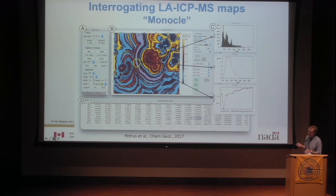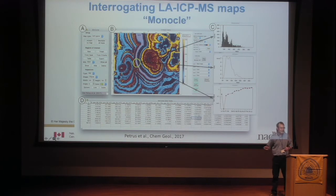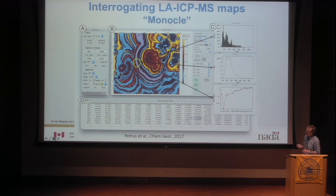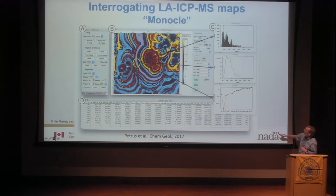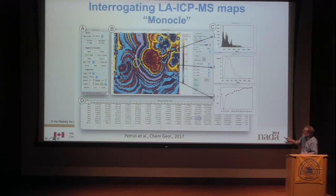Now we've got this massive amount of data we can generate in a matter of hours — how do we use it? This is where modern software comes into play. They're now developing very clever software that allows you to interrogate these elemental maps. For instance, the Monocle software lets you pick out an area of interest, immediately shows you histograms and rare earth plots for that area, and you can even use it as a seed to find all the pixels in the map of similar chemistry and tabulate the results and generate plots.